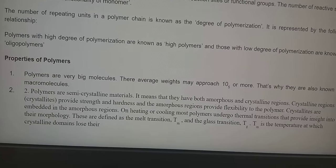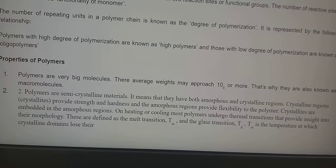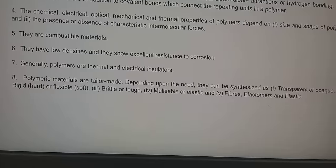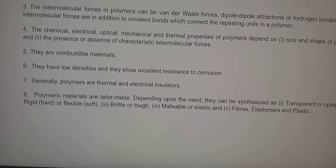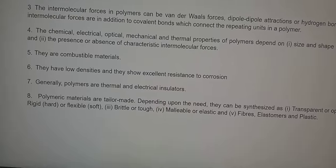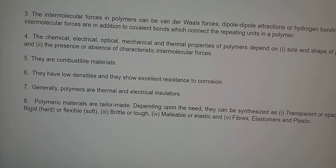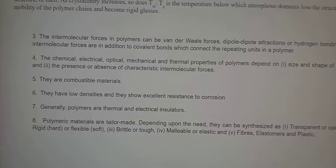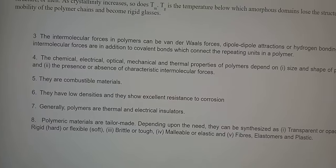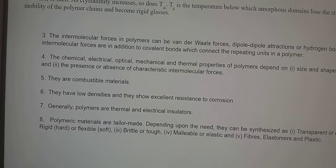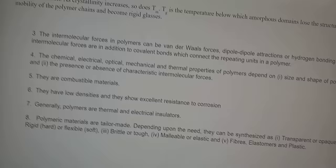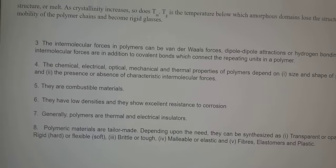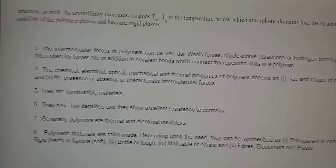These thermal transitions are defined as the melt transition temperature and the glass transition temperature. Another property concerns the intermolecular forces in polymers, which may be Van der Waals forces, dipole-dipole attractions, or hydrogen bonding. These intermolecular forces are in addition to the covalent bonds connecting the repeating units. The chemical, electrical, optical, mechanical, and thermal properties of polymers depend on the size and shape of the polymer and the presence or absence of characteristic intermolecular forces.